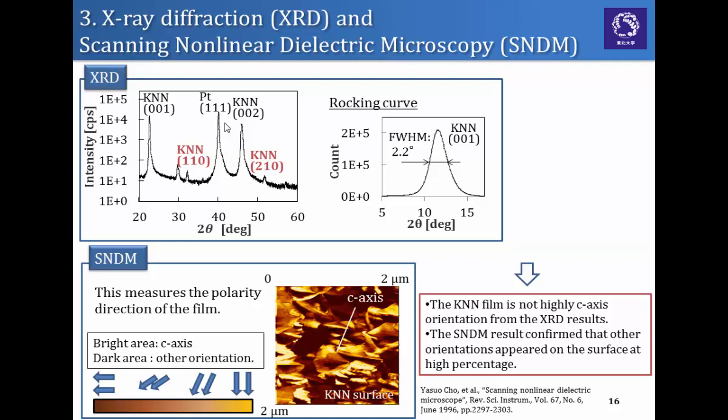Finally, we performed the XRD and SNDM measurements. This is the result of XRD. You can see the film is mostly oriented in the C-axis. However, other orientations such as 110 or 210 appeared on the surface. So from this result, the film is not so highly C-axis.